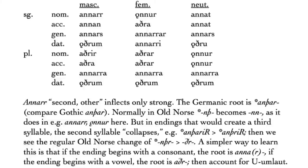As mentioned, 'annarr' is an adjective meaning both 'second' and 'other' — it is related to English 'other' from the same root. It inflects a little differently than people expect, having to do with what happens to 'nn' followed by a thorn in the history of Old Norse. It basically has normal adjective endings, but think of the root as two different things: if followed by a consonant, the root form is 'annar-' (annarr, annarar, annari); if followed by a vowel, the root form is 'aðr-', giving aðrir, aðrar, öðrum with u-umlaut.